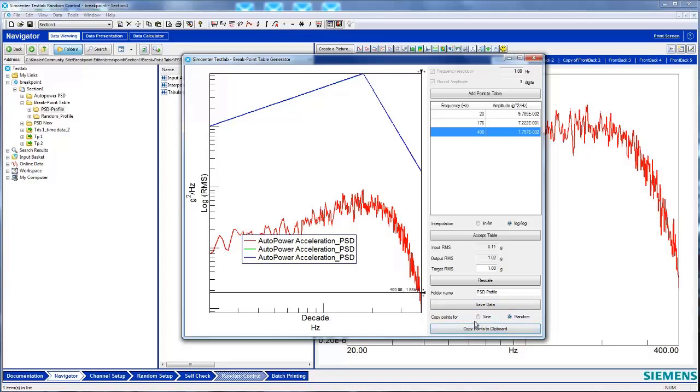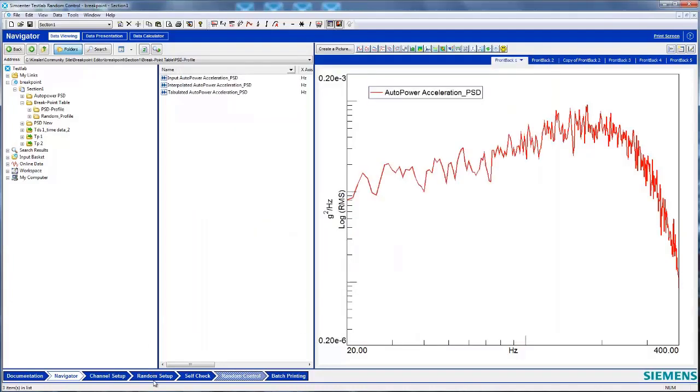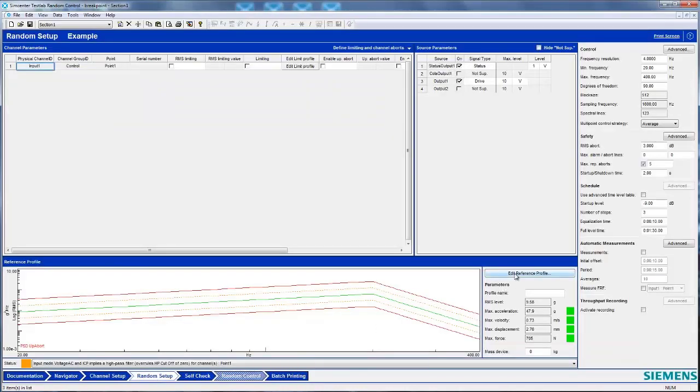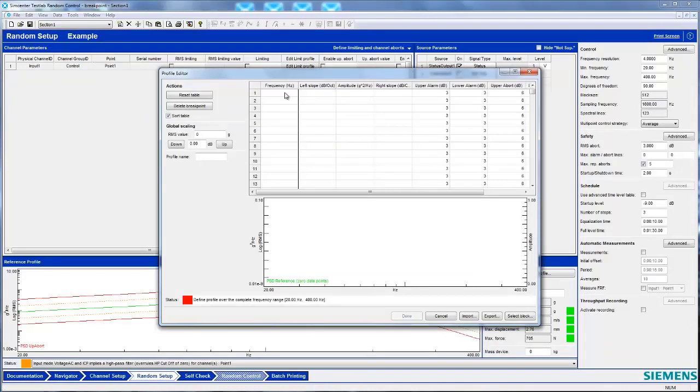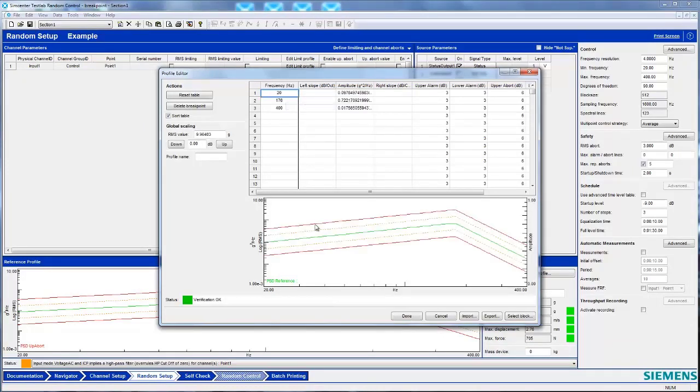You can also use this tool to generate a sine profile. Now I'll go to my random setup sheet, edit the reference profile, and I can paste in my data. The Breakpoint Table Generator makes creating reference profiles quick and easy.